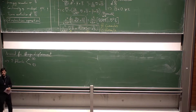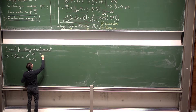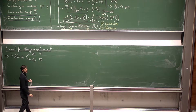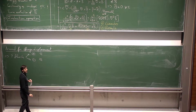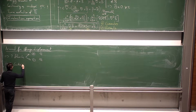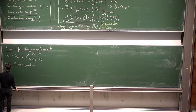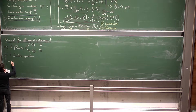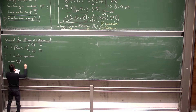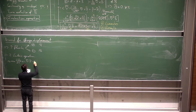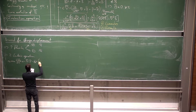Since we have two fluids — ions and electrons — we need to study them independently and write two separate Euler equations, one per fluid.